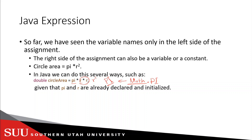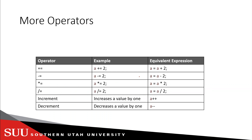Now let's talk about more operators — more ways to use operators. We have seen the plus operator and the equal operator, and you can use them in different ways. For example, `a += 2` means `a = a + 2`. Similarly, `x += 1` means `x = x + 1`. This notation works with plus, minus, multiplication, and division as well.